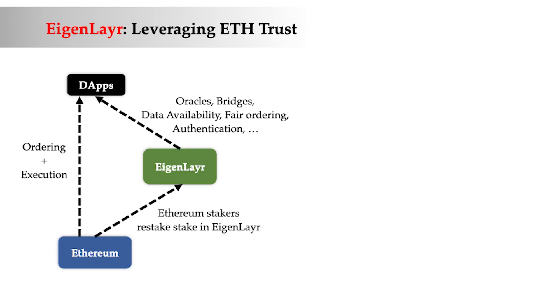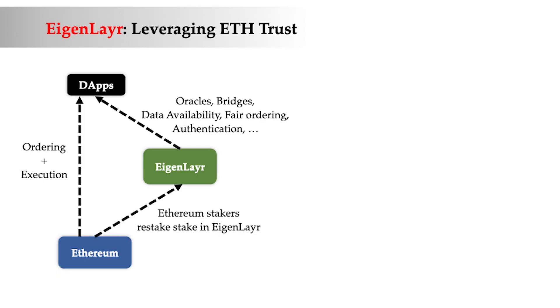Somebody wants to build an oracle, a bridge, a data availability layer, a new consensus protocol — any of these can be built on top of Eigenlayer. If you are a staker opting in to Eigenlayer, you also specify which subset of services you are opting in to provide trust for. You may say, 'I like the oracle project because I'm getting X revenue and need to do X work — so I'm opting into the oracle but not into some other service.' As a staker, you can specify which subset of services you're opting into, gaining revenue and potentially taking additional slashing risk.